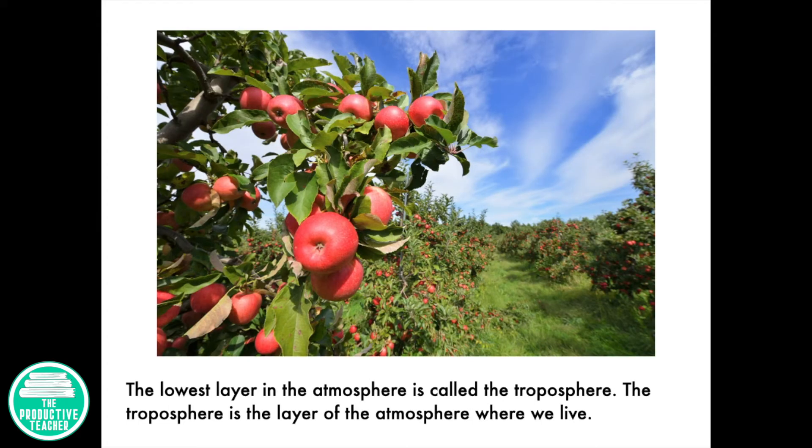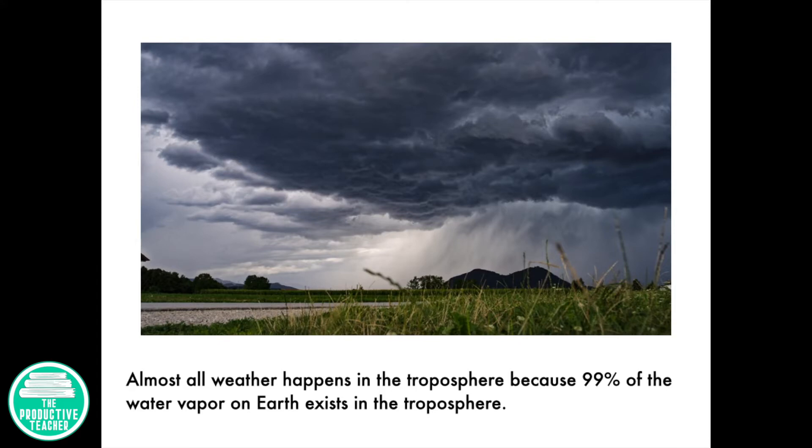The lowest layer in the atmosphere is called the troposphere. The troposphere is the layer of the atmosphere where we live. Almost all weather happens in the troposphere, because 99% of the water vapor on Earth exists in the troposphere.